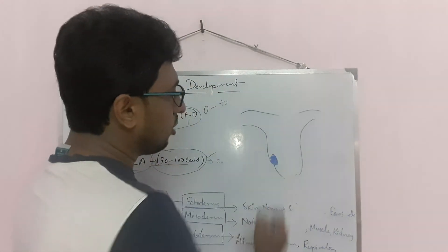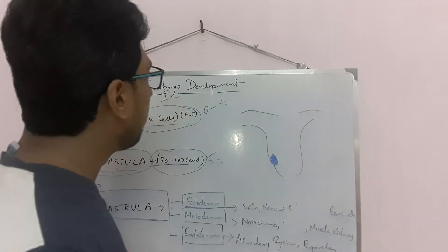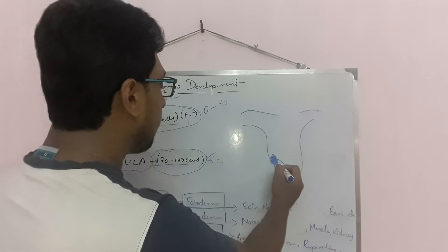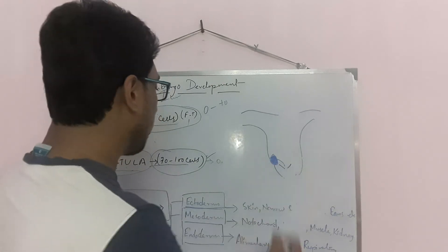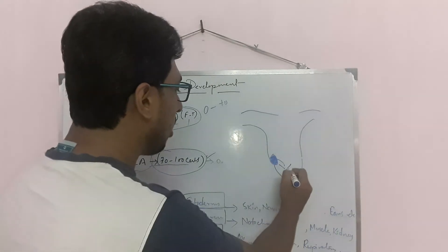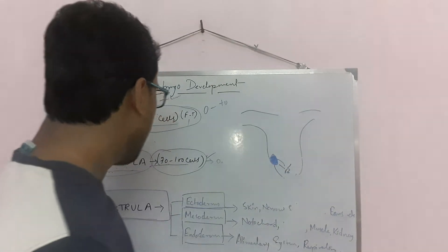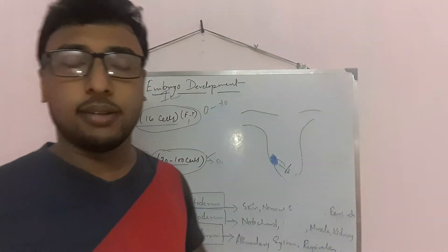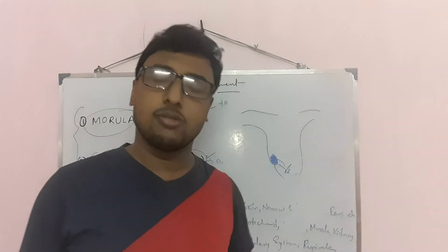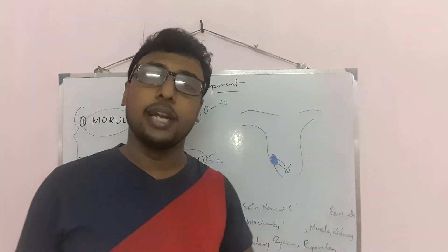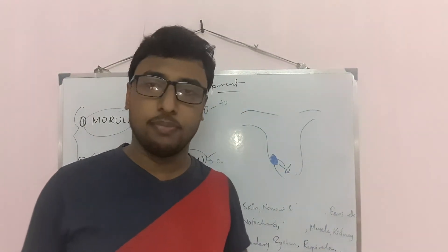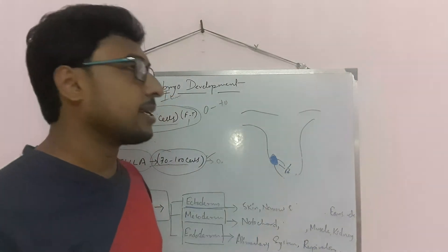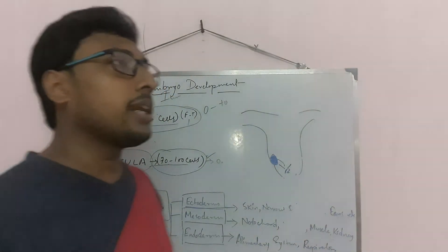After implantation, the development of the embryo continues: blastula or blastocyst forms, followed by gastrula, in which the three main layers — ectoderm, mesoderm, and endoderm — develop.